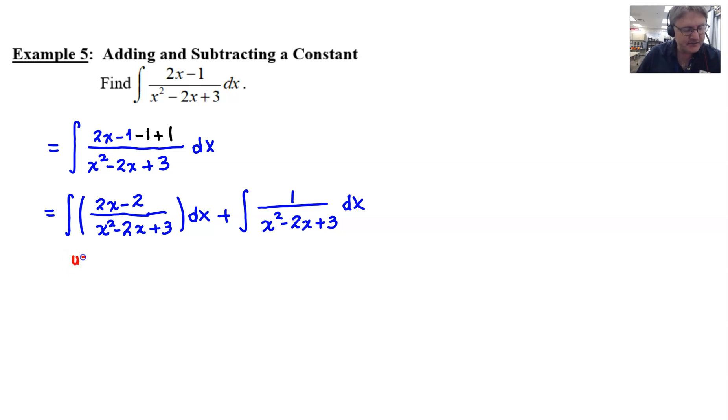So for the first integral, let u be the denominator. That means that the numerator hopefully will match our derivative. We're going to find out here. 2x minus 2. Yes, indeed. It's a perfect match. You don't have to offset with anything.